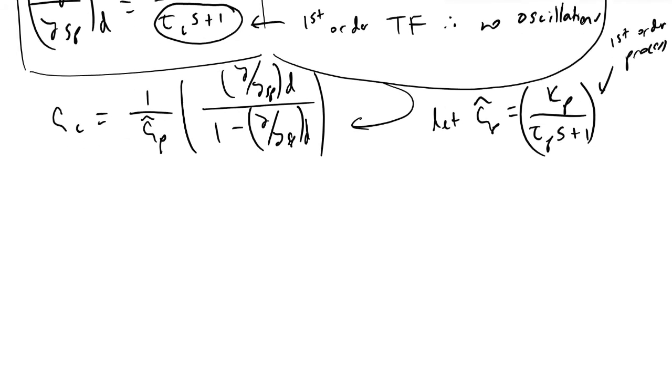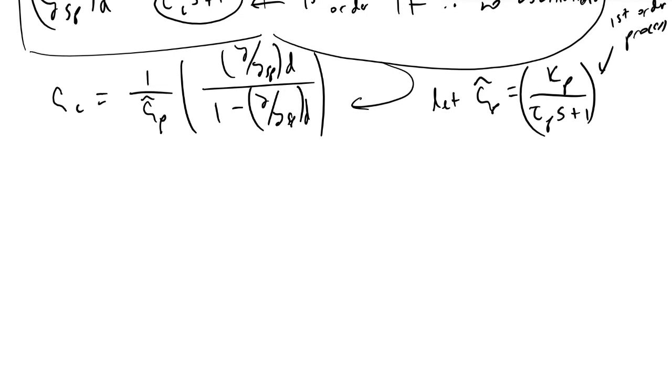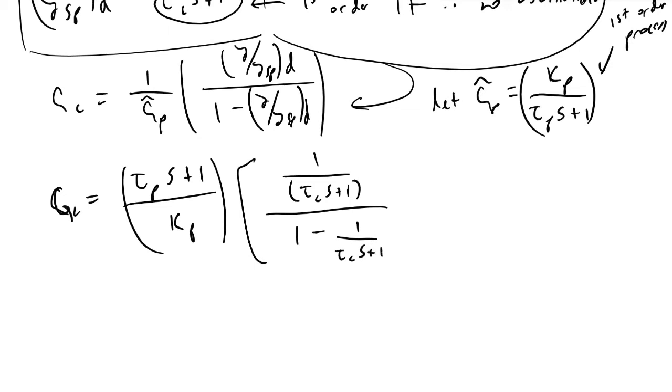And so if we do the algebra and again, solve for GC, what we will see is that GC is equal to tau_p times s plus one divided by Kp, the gain of our process. And then this is times one over quantity tau_c*s plus one divided by one minus one over quantity tau_c*s plus one. And this term is also equal to tau_p*s plus one divided by Kp times the quantity one over tau_c*s.